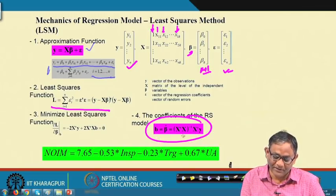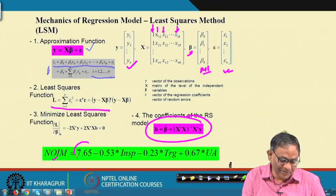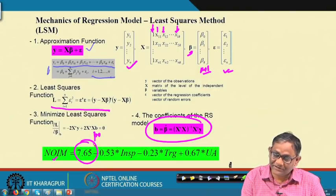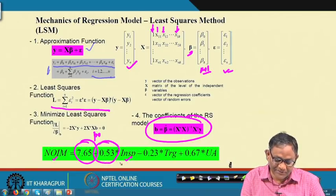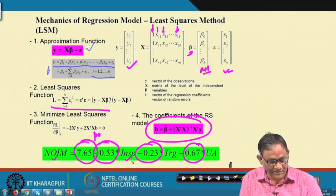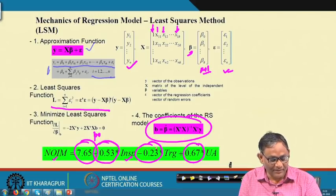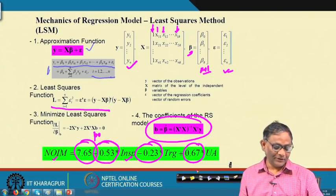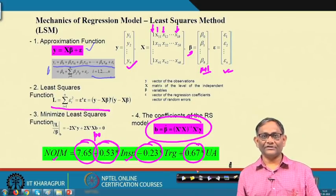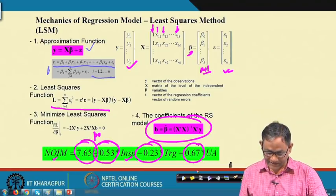Using software such as Minitab, you get the result: NYM = 7.65 − 0.53·Inspection − 0.23·Training + 0.67·Unsafe Acts. That means if inspection increases, NYM decreases; if training improves, NYM decreases; and if unsafe acts increase, NYM increases. This is quite logical, and although the data is hypothetical, it gives a conceptually correct result.